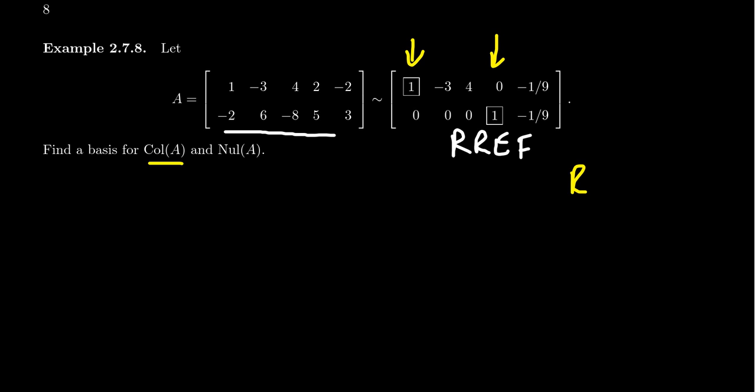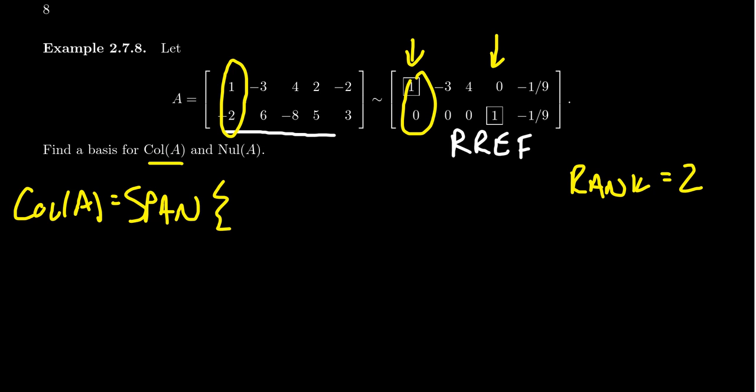The number of pivots is going to give you the rank of the matrix. That is, this is going to be the number of vectors you need to span the column space. So the column space, which is the span of all five columns, you only need two of the columns. And which two columns are you going to choose? You're going to choose the first column because that was a dependent variable. You get a pivot there in the matrix. So we're going to get 1 and negative 2. And then you're also going to take the fourth column because that was a pivot column. And so that gives us the vector 2 and 5.